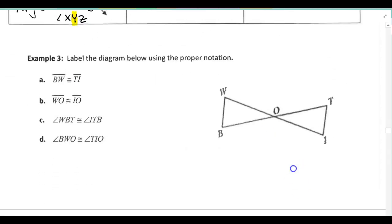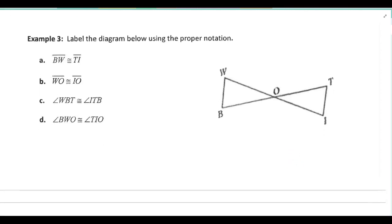Alright, let's move on to example three. One of the skills that you're going to need to have is to be able to take information that's given to you and label your picture with tick marks. We've talked a little bit about this already, so let's go ahead and do this. So for part A, we've got segment BW is congruent to segment TI. So again, I could use any tick marks that I want. I'm going to put little circles this time. So there's BW, and way across here is TI. So now I can see, just by looking at my picture, these have the same tick mark. Those two segments are congruent.